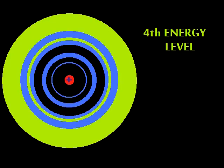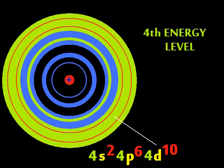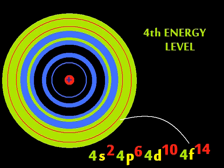The fourth shell is the largest yet — an S and a P and a D, I'll bet. An F sublevel is also seen. How many electrons? Up to 14! That's a lot!